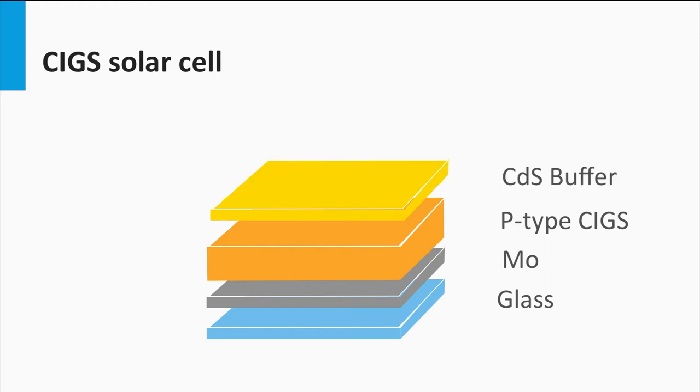The p-n junction is formed by a thin n-layer of around 50 nm on top of the p-type CIGS that is based on cadmium sulfide. This layer is referred to as the buffer layer. The n-type region is extended with an n-type TCO. First an intrinsic zinc oxide is placed, followed by an aluminum doped zinc oxide. The aluminum doping makes the zinc oxide n-type.